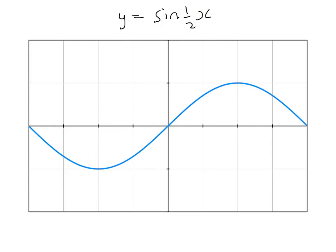And when we get to y equals sin of a half x, this stretches it by a scale factor of 2, or you could say squashes it by a scale factor of a half. The fact that the half x happens before it's signed means we've got the opposite of what you expect — this doesn't halve it in the x direction, it doubles it in the x direction.